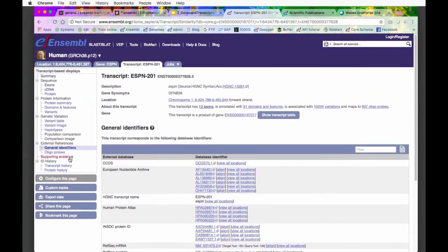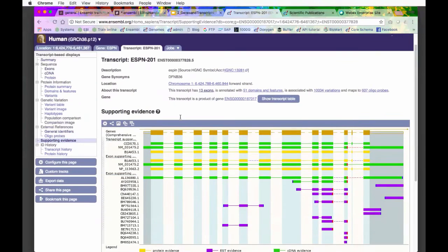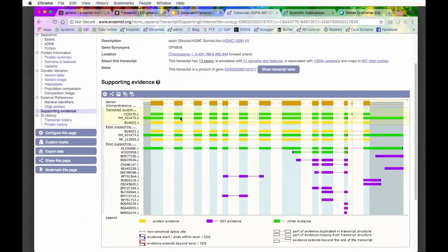I'm going to go to supporting evidence here because I did mention the amount of data that supports whether or not a transcript really exists. If I go into supporting evidence, I get a little graphic that shows me all of the bits of data that we used by our annotators to put this together. We have the bits of data that support the whole thing. We have the structure of it here. This NM, if I click on it, you can get the cDNA.